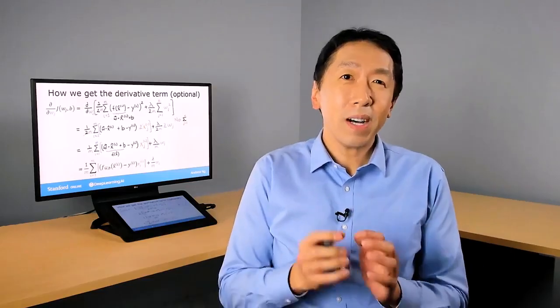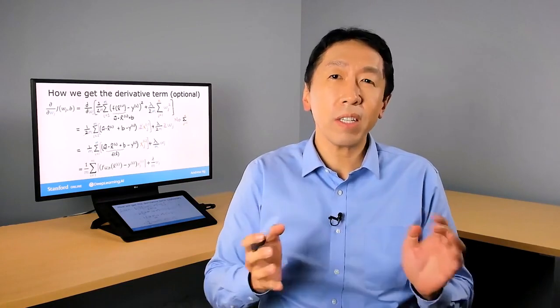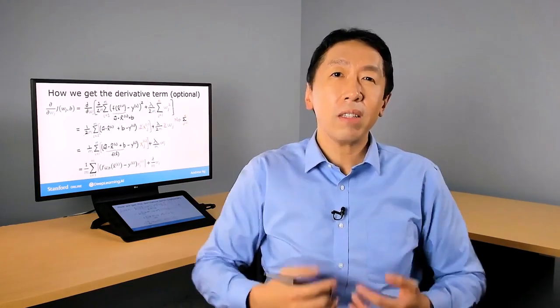So you now know how to implement regularized linear regression. Using this, you really reduce overfitting when you have a lot of features and a relatively small training set. And this should let you get linear regression to work much better on many problems.